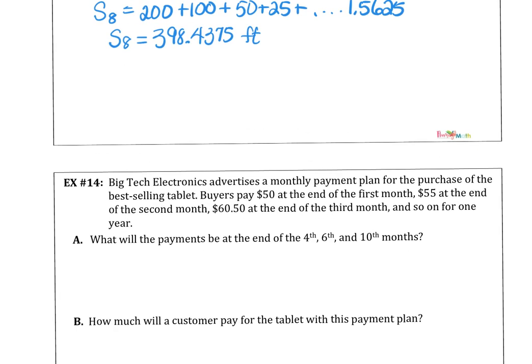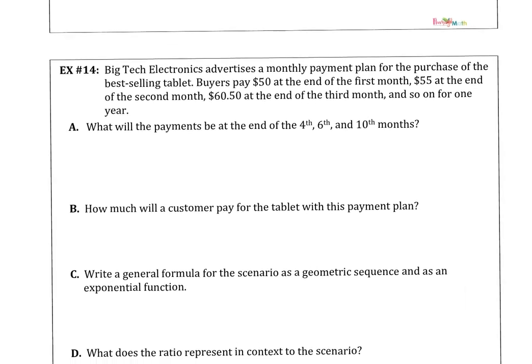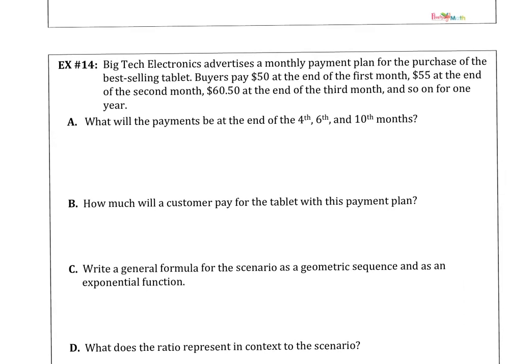Our last example, number 14, tells us that Big Tech Electronics advertises a monthly payment plan for the purchase of the best-selling tablet. Buyers pay $50 at the end of the first month, $55 at the end of the second month, $60 at the end of the third month, and so on for one year. What will the payments be at the end of the fourth, sixth, and tenth months?